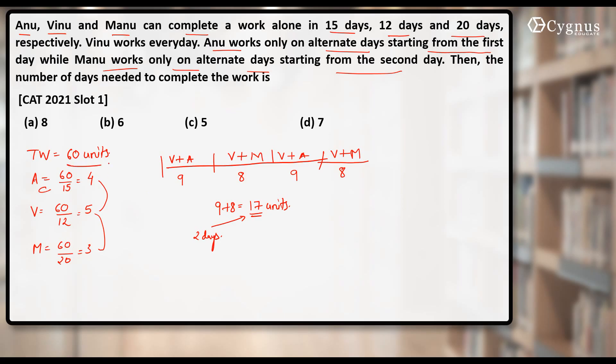What is the total work? It is 60. So first two days, they will finish 17 units, next two days again they will do 17, next two days again they will do 17, that means effectively they must have finished 51 units of the work in 6 days.